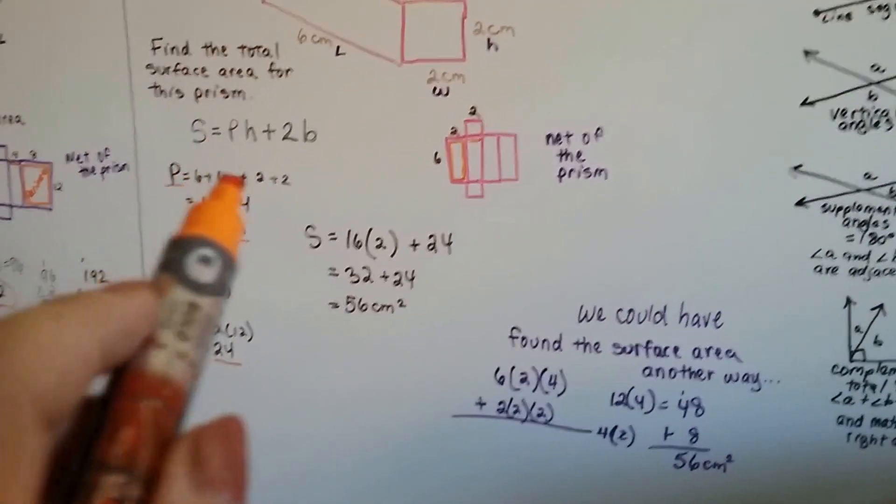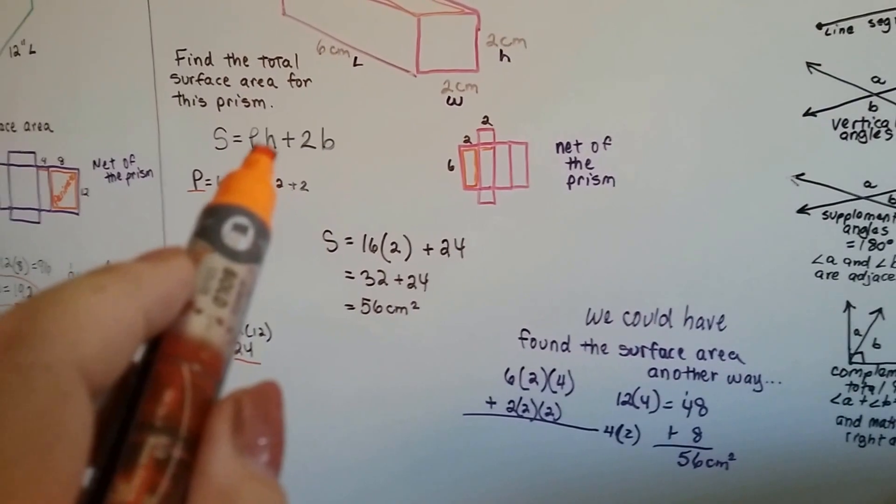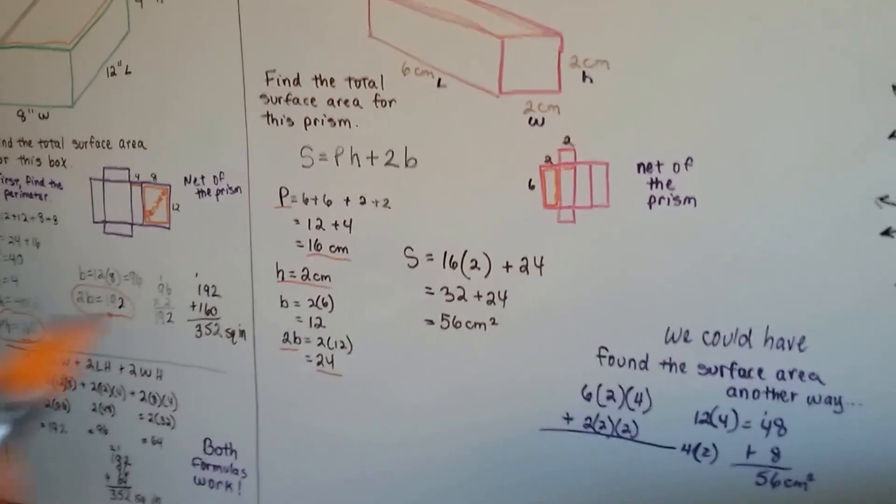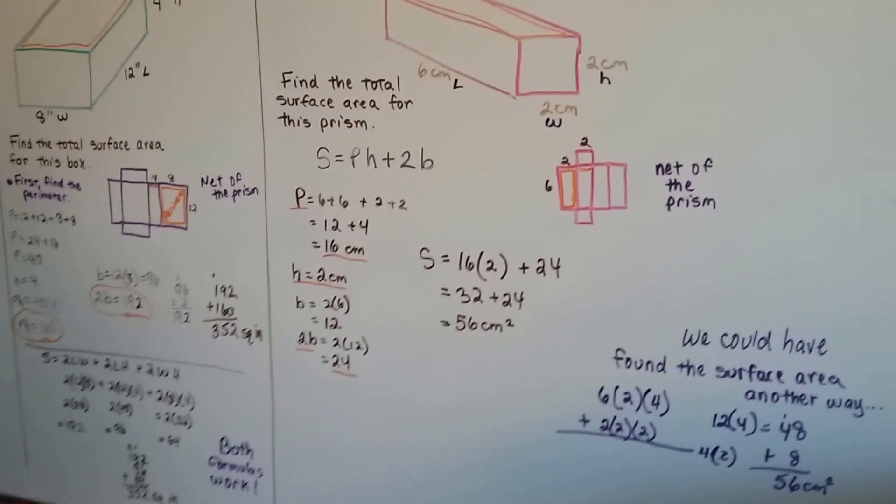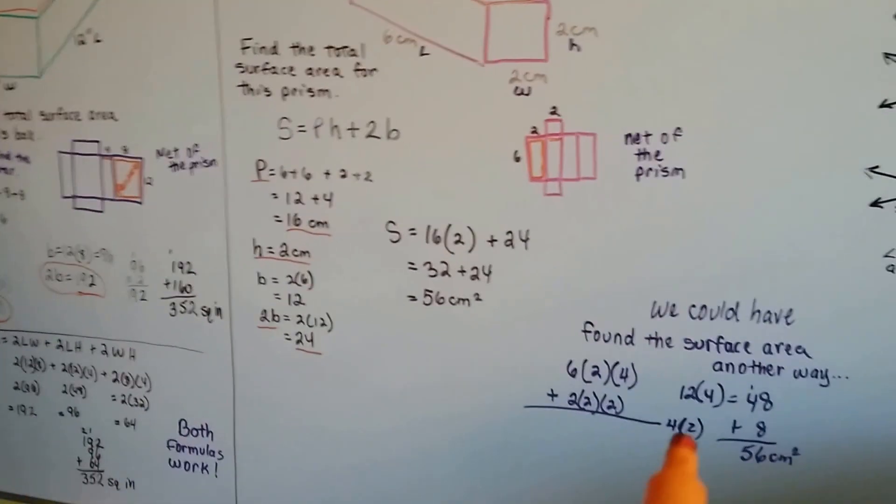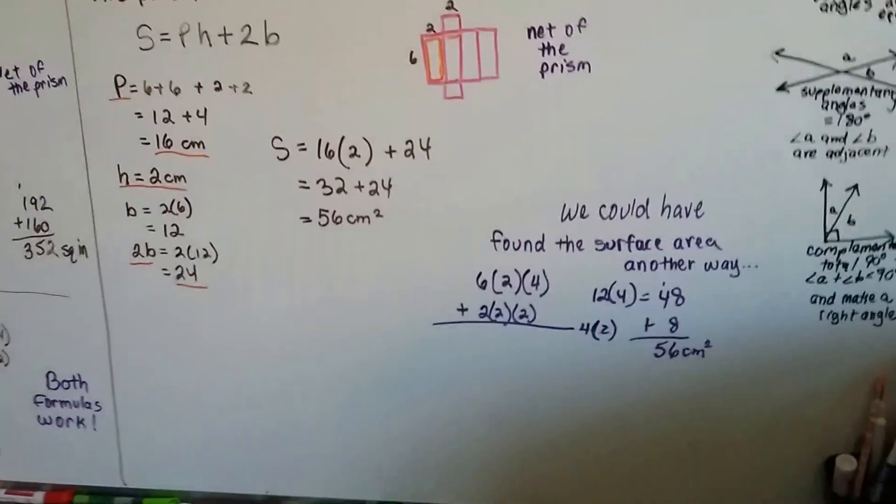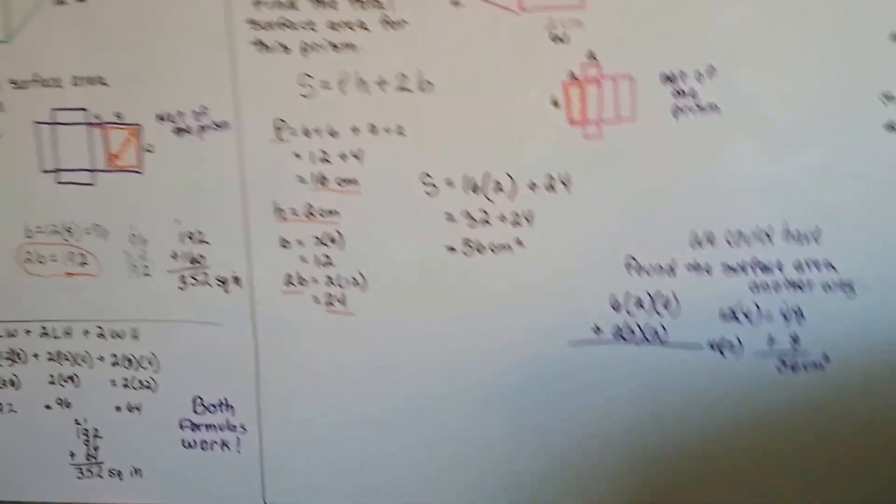You want to do it the adult way, the mathematician way, so that your mind is more open to using formulas like we're going to in the future. But that would work. You'd get the right answer. You'd get 56 centimeters squared.